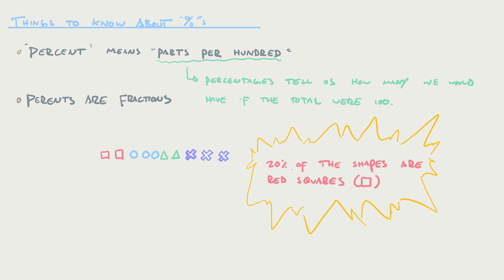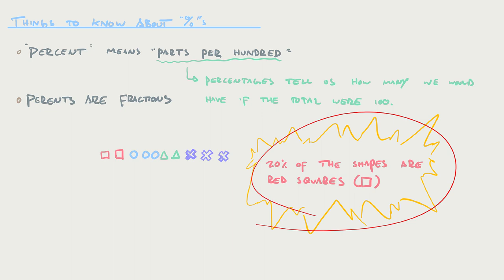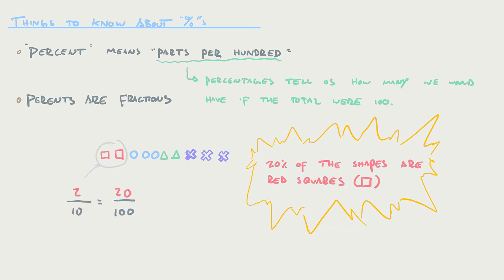Percents are fractions, and because they're fractions, we don't actually have to have 100 items. Here we just have 10. Still, it's true that 20% of the shapes are red squares in this example, because 2 out of 10 is exactly the same fraction as 20 out of 100. You've just divided by 10 in the top and the bottom — you've reduced the fraction.